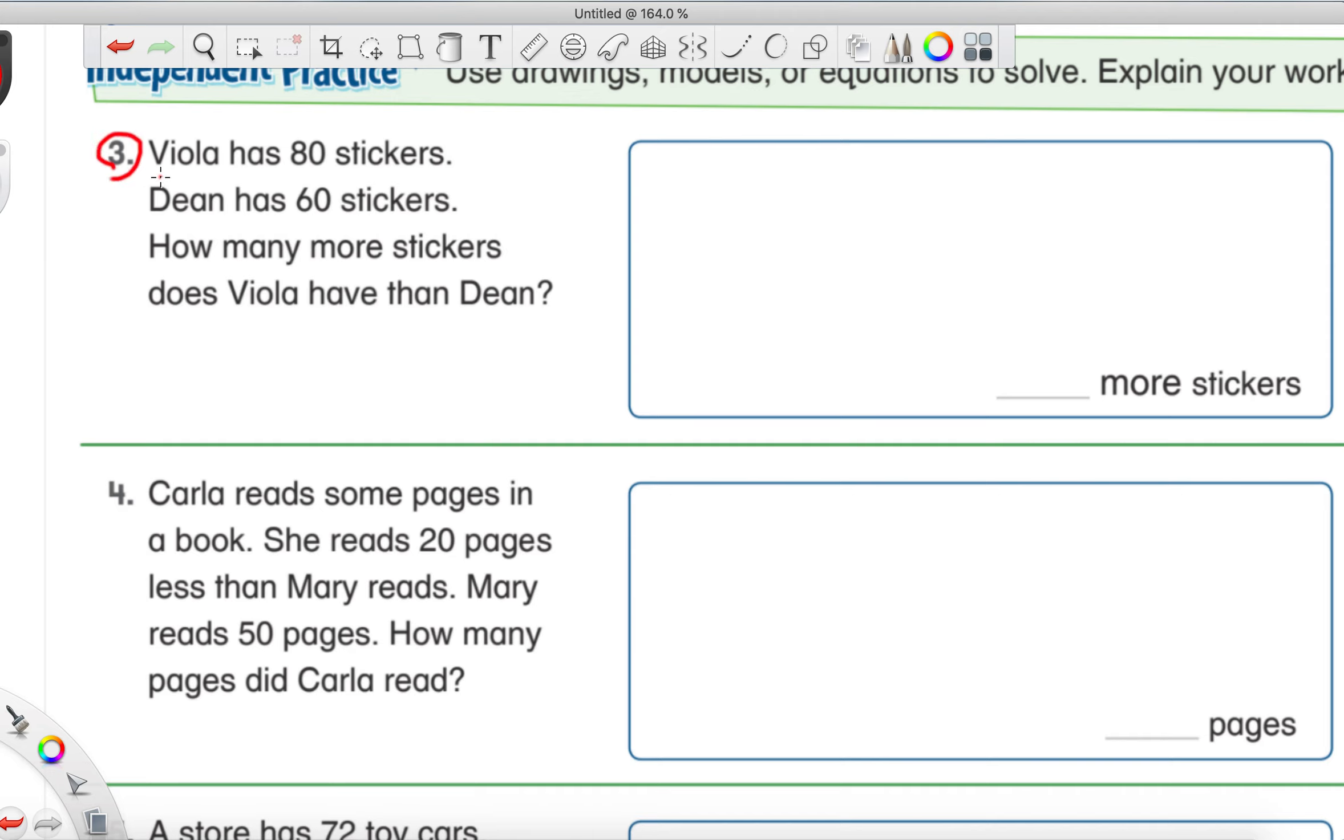So, for number 3, we're going to do it the same way that we did the last one. I'm going to read it to you. As I read it, when you hear super special things, like maybe a special number or a special word, make sure you circle it. So, for number 3, it says, Viola has 80 stickers. Dean has 60 stickers. How many more stickers does Viola have than Dean? Oh, I heard a pretty special word towards the end there. I'll give you a few moments. I hope that you are paying attention and circling the important numbers or words.